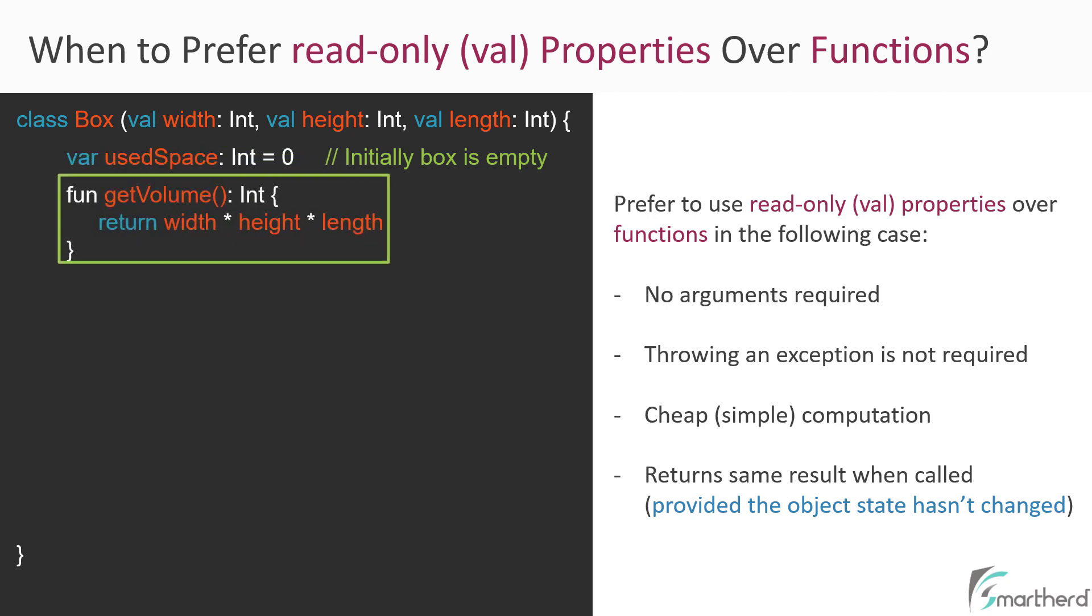Now suppose I define a function to compute the volume of the box and return the volume. As per the rule we have seen, our function does not have any arguments, does not throw any exception, is doing a very simple calculation, and always returns the same result whenever invoked. Because this width, height, and length are declared using val keyword, the volume of the box will never change in future after we define it. So this function meets all the given criteria. As per the Kotlin coding convention, we should instead prefer to use a read-only property instead of this function.